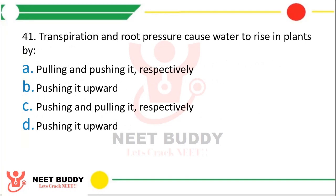Question 41. Transpiration and root pressure cause water to rise in plants by pulling and pushing it respectively, pushing it upward, or pushing and pulling it respectively. The correct answer is option A — by pulling and pushing it respectively. Transpiration pulls the water and root pressure pushes the water upwards.